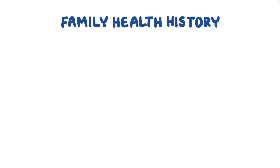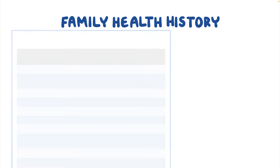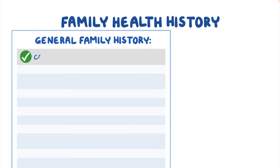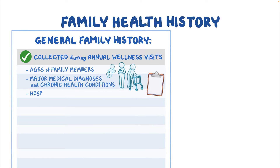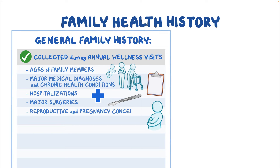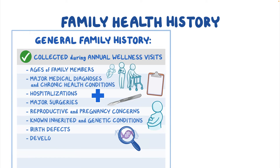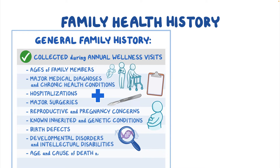Every patient has a family health history that can indicate an increased or decreased risk of developing certain health conditions. A general family history should be collected during annual wellness visits and should include questions about the ages of family members, major medical diagnoses and chronic health conditions, hospitalizations, major surgeries, reproductive and pregnancy concerns, known inherited or genetic conditions, birth defects, developmental disorders and intellectual disabilities, and age and cause of death of relatives.